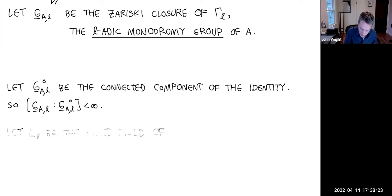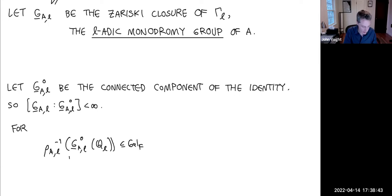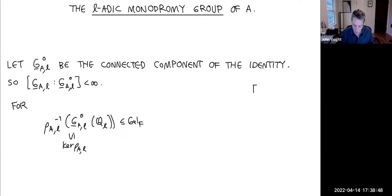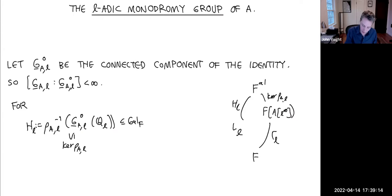We take the inverse image of the Q_ℓ-points of the connected component under ρ_{A,ℓ}: this is something inside Gal(F) that contains the kernel. In the field diagram, the kernel of ρ_{A,ℓ} is below the field where the ℓ^∞ torsion is defined. I want to take the fixed field of this group; I'll call it L_ℓ, and let Γ^0_ℓ be its image.